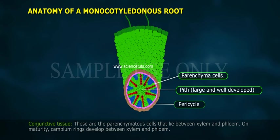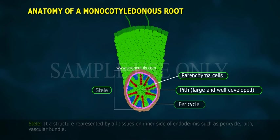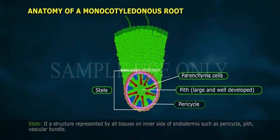On maturity, cambium rings develop between the xylem and phloem. Stele: it is a structure represented by all tissues on the inner side of the endodermis, such as pericycle, pith, and vascular bundle.